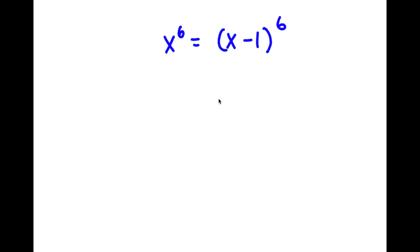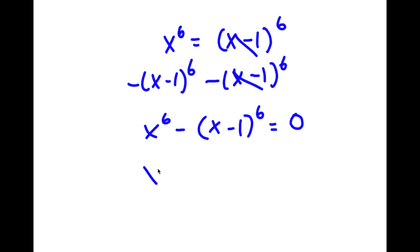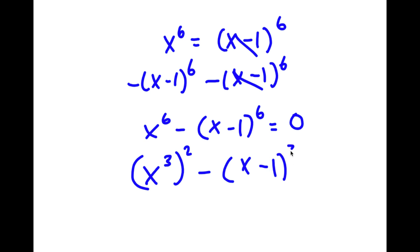In this problem, I have x to the power of 6 is equal to x minus 1 to the power of 6. I'm going to first start by subtracting x minus 1 to the power of 6 on both sides. These two cancel out, and I get x to the power of 6 minus x minus 1 to the power of 6 is equal to 0. Now I'm going to rewrite this as x to the power of 3 squared minus x minus 1 to the power of 3 squared is equal to 0.